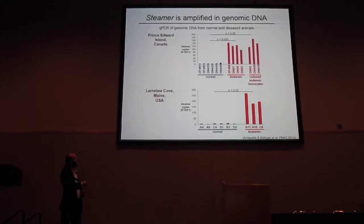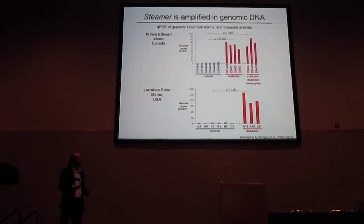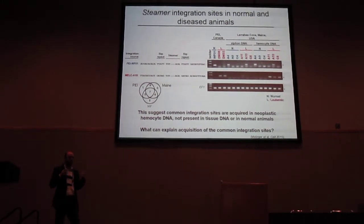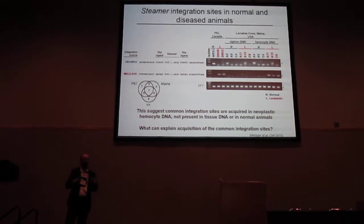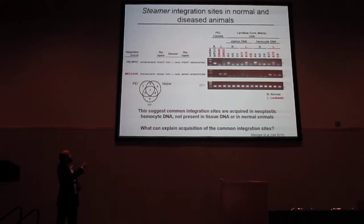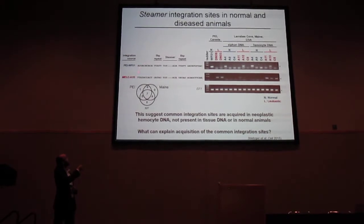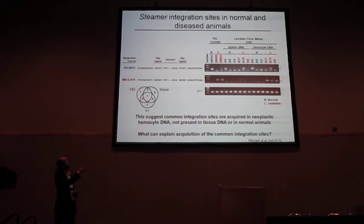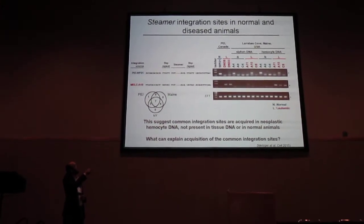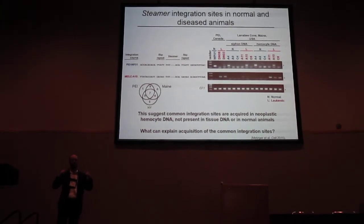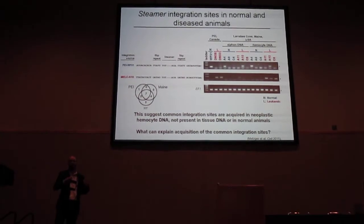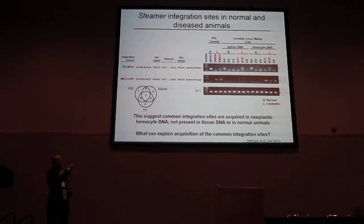We then wanted to look at the integration sites of those transposons. I used inverse PCR to clone out a dozen integration sites from diseased animals and several from normal animals. I'm showing here a representative sequence from a normal animal and one from a diseased animal in red: the upstream region, the characteristic five base pair repeat, the Steamer integration site, and the downstream region. We designed a forward primer in the Steamer element and a reverse primer in the flanking sequence to make a PCR diagnostic for a single specific integration site. This site identified within a normal individual is present in some individuals and not others, and is not correlated with disease — it's just a natural polymorphic integration site.